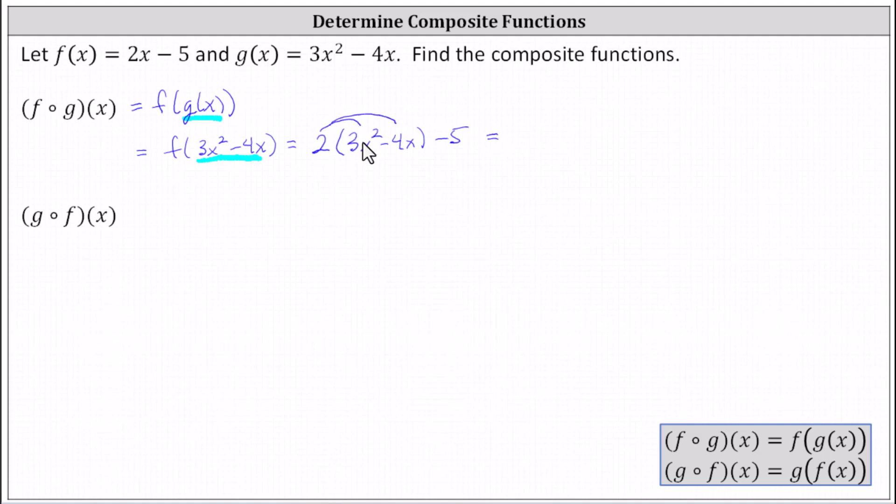We have 2 times 3x squared is 6x squared, and then we have minus 2 times 4x or minus 8x, minus 5. f of g of x equals 6x squared minus 8x minus 5.